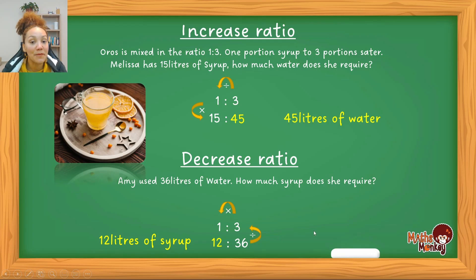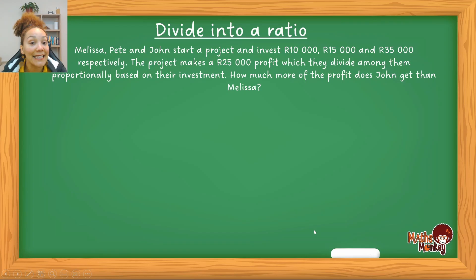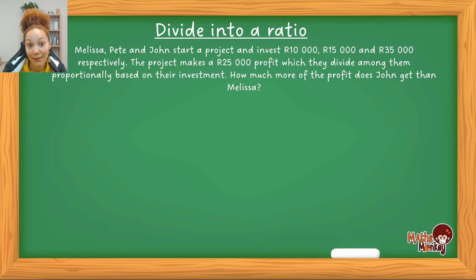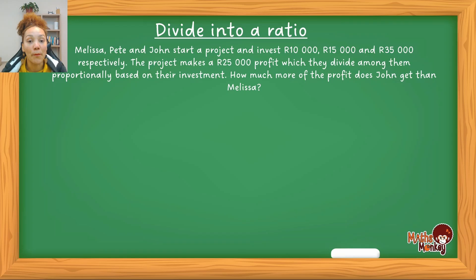You must be able to identify the different types of questions being asked. The last type — dividing into a ratio — is the one that counts the most marks and can appear in finance, measurement, or any topic. I'm going to work through this slowly. The method I've used might not be the quickest, but it's the one that best helps you understand.